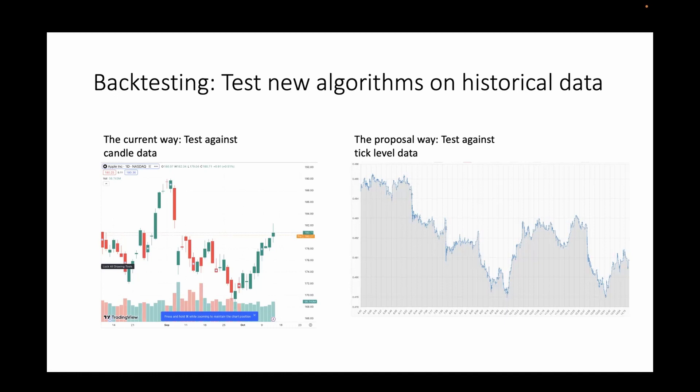You compress that time period into five numbers: the opening price, closing price, high price, low price, and the total trade volume during that period. That's really how all the financial backtesting is done and how all the charts are analyzed.